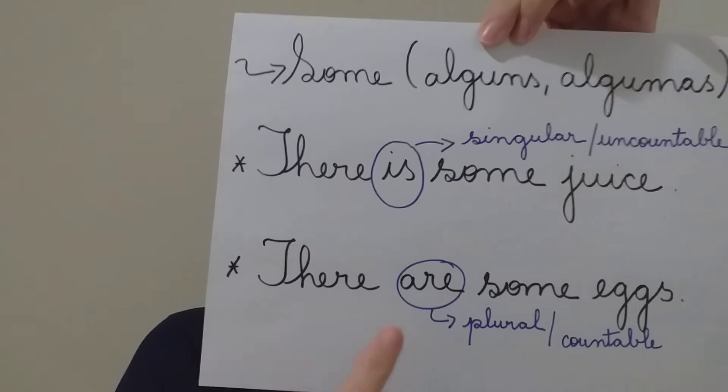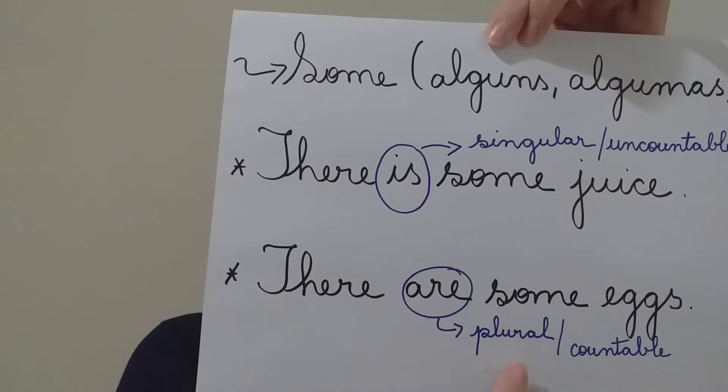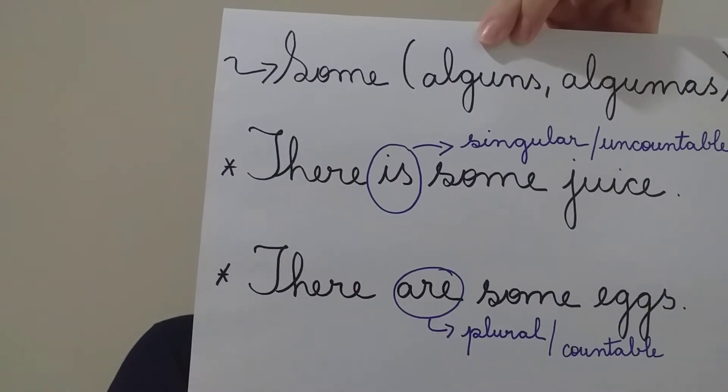Então, quando nós podemos contar e estar no plural, nós usamos 'there are'. O adverb 'there', mas o verbo to be 'are' — there are, ok? Countable — one, two, three, four. Podemos contar. There is — uncountable.